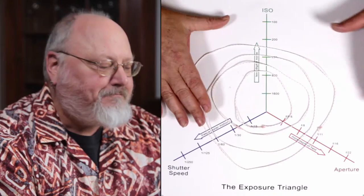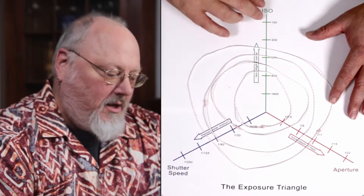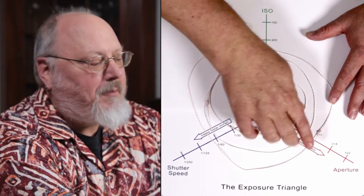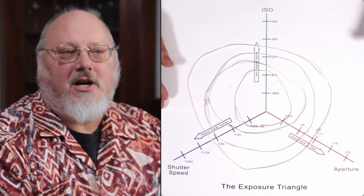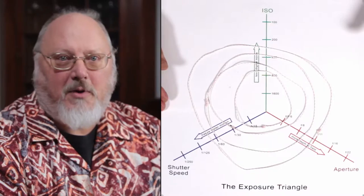So this diagram shows the three functions. They are the ISO, the shutter speed, and the aperture. Between the three of them, you make the adjustments no matter what the lighting situation in order to get the proper exposure.